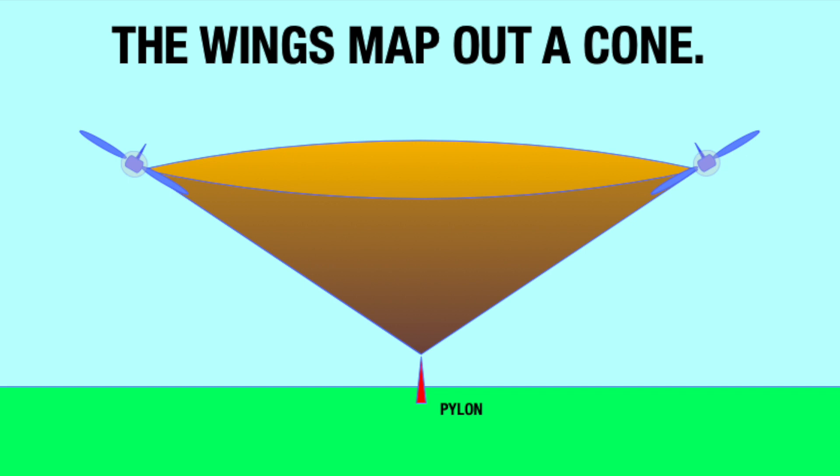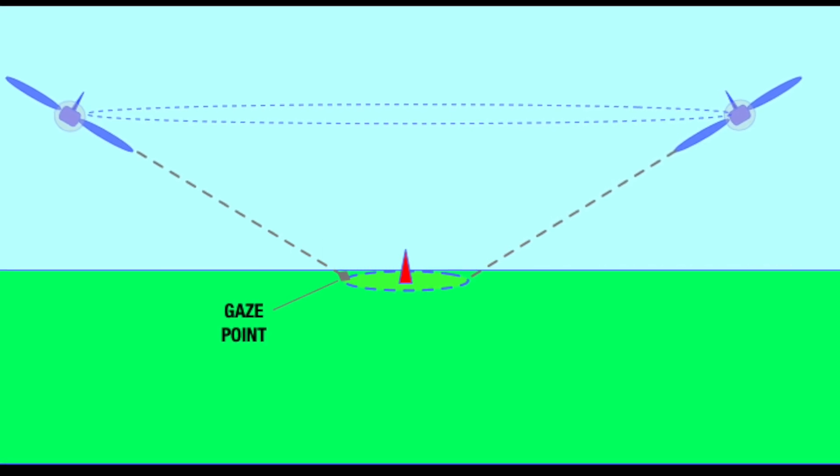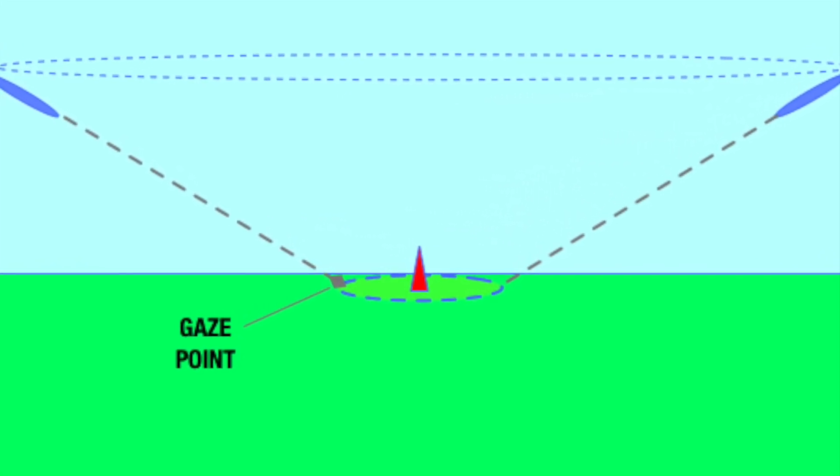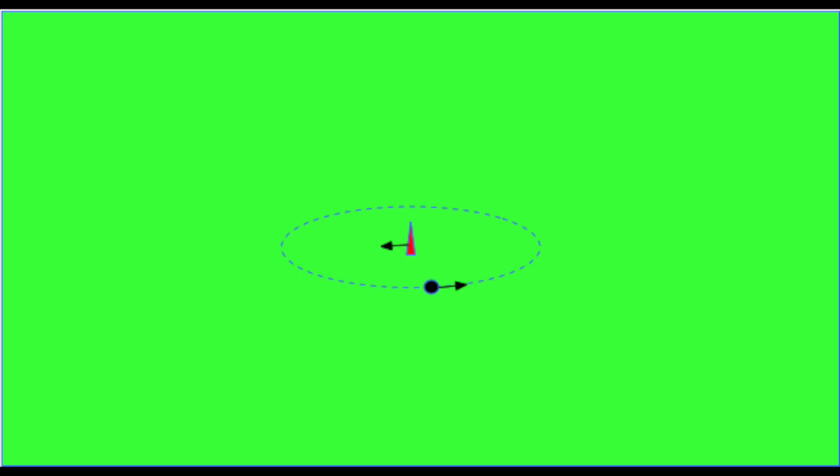What if the airplane is flown at a lower altitude? In other words, an altitude less than pivotal altitude. If the plane is flown too low, the tip of the cone is underground. The pilot's line of sight traces a circle around the pylon. In other words, the gaze point moves around the pylon in a circle. Since the gaze point moves with the airplane, the pylon will appear to recede.